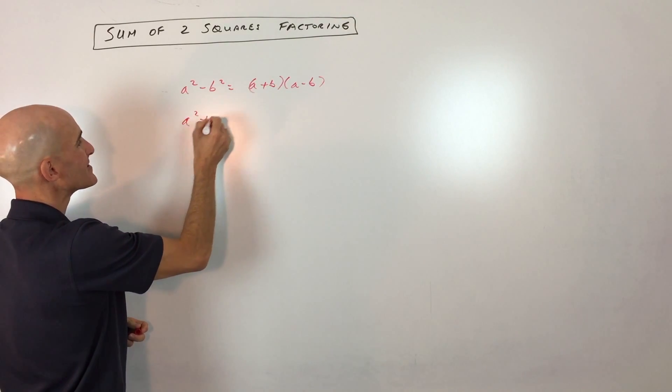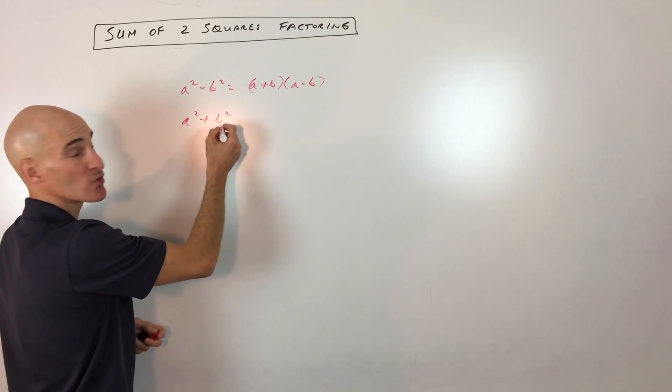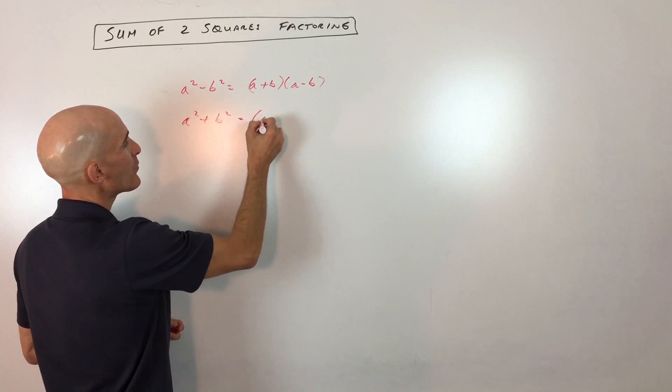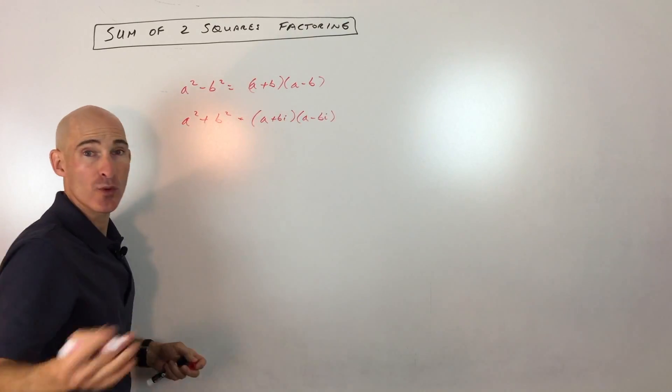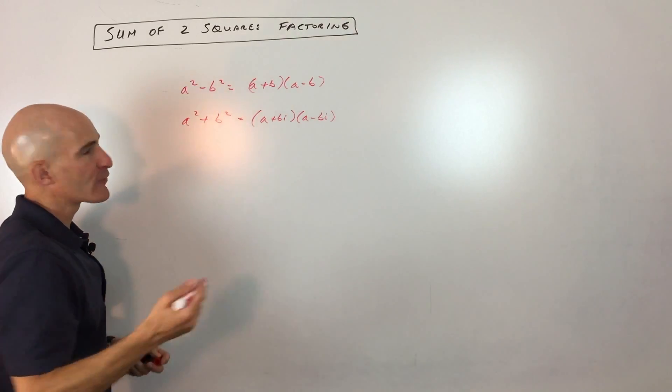But now what we're going to do is factor the sum, which means you're adding two squares, two perfect squares. And the way we're going to factor this is a plus bi times a minus bi. Now look what happens here. Let's do an example first and I'll show you.